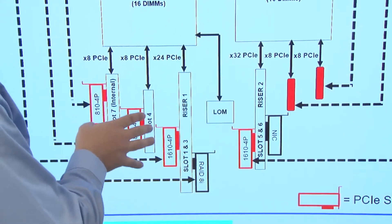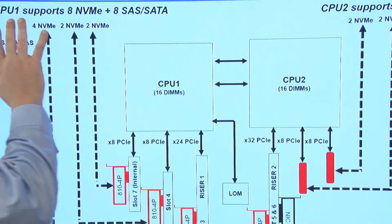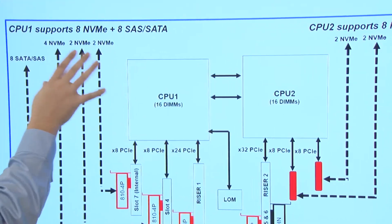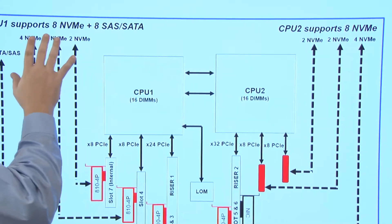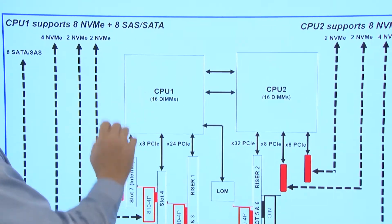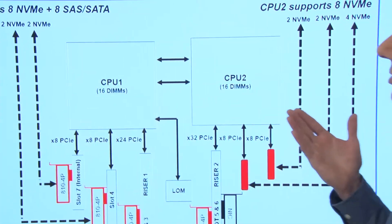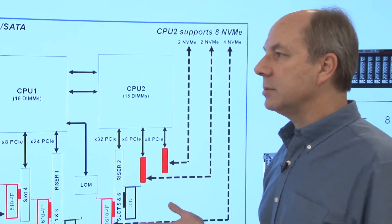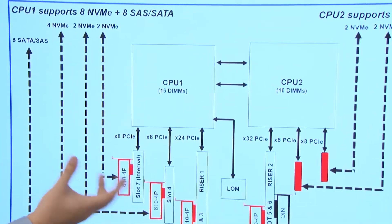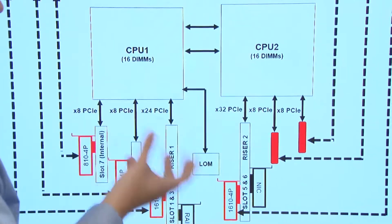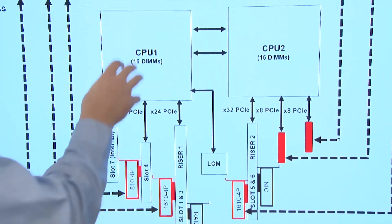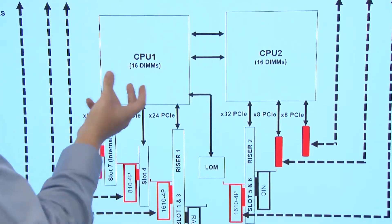In this case here, we've got a configuration that supports up to 16 NVMe drives, and we have a balanced configuration with 8 NVMe drives that connect back to CPU1, and 8 NVMe drives that connect back to CPU2. Now, why is having a balanced configuration important? A balanced configuration is important for those applications and workloads that want to get the maximum performance benefit.